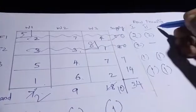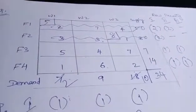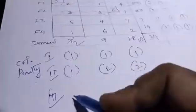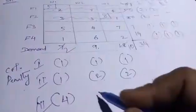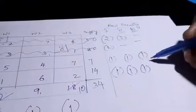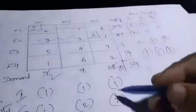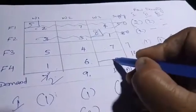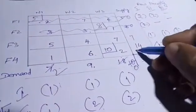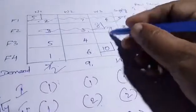Now we go for the third penalty. Column penalties: 5 minus 1 equals 4, 6 minus 4 equals 2, 7 minus 2 equals 5. The highest penalty is 5. Minimum value in that column is 2. Supply is 14 and demand is 10, so we allocate 10. Supply becomes 4 and demand becomes 0, so we cut that column.